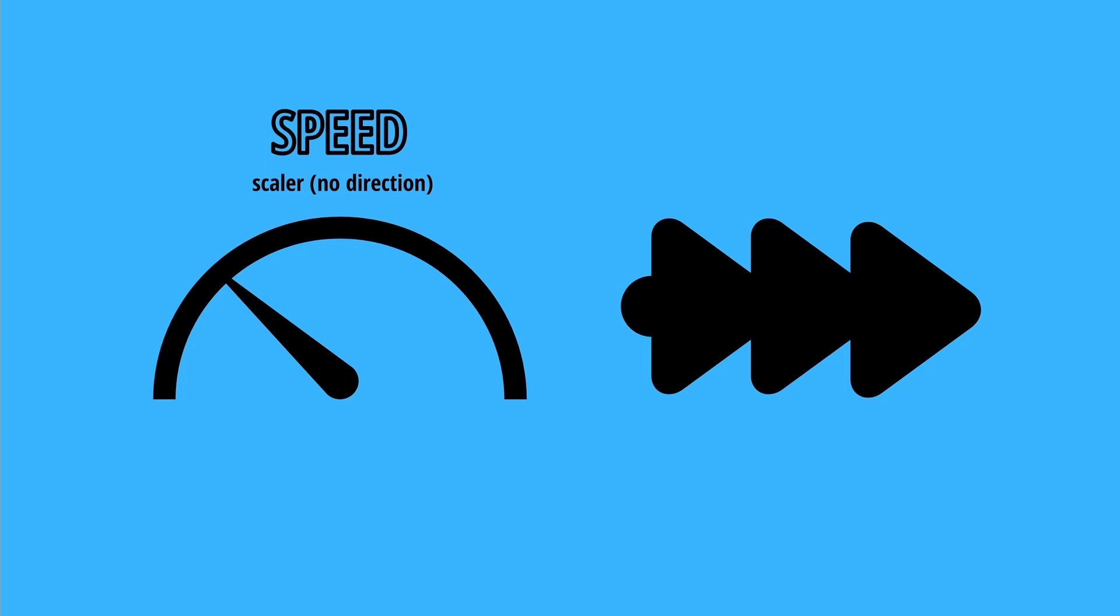Speed is a scalar quantity, which does not have direction. Velocity is a vector quantity, which does have direction. The speed just indicates the magnitude. Velocity indicates both the magnitude and the direction of the motion.